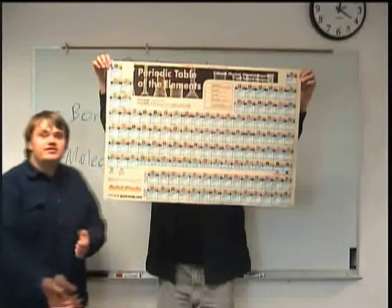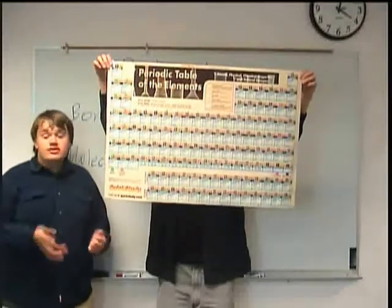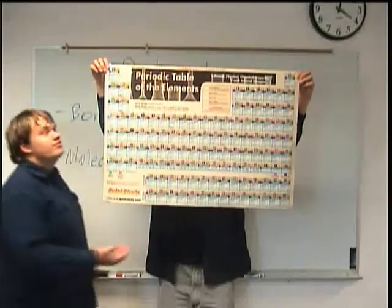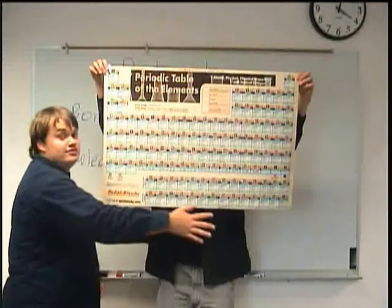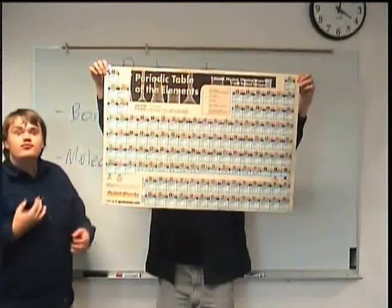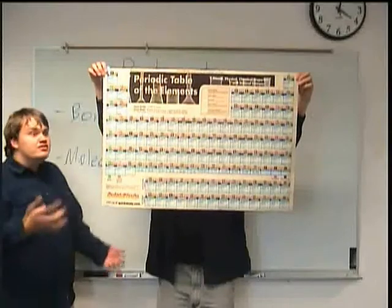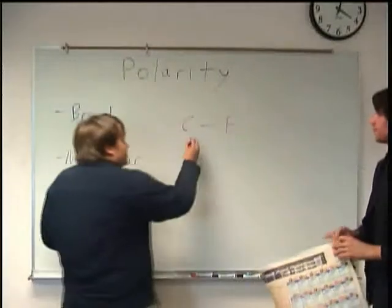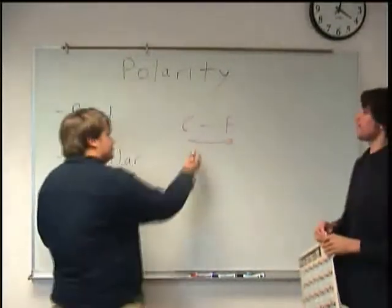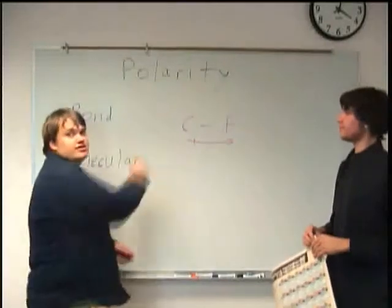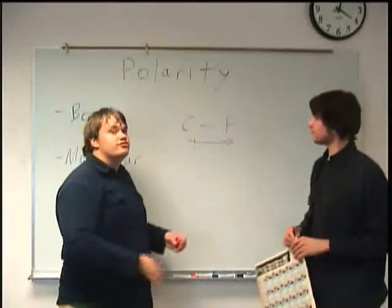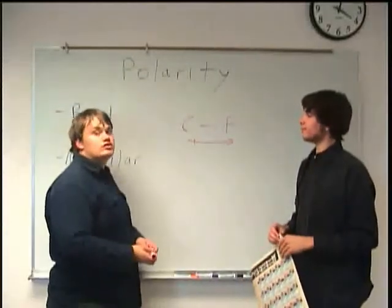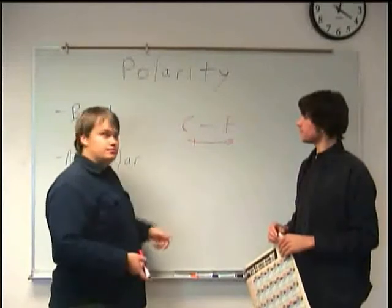Usually when you have that wide of a gap, like three spaces or so away from each other, that's usually a good indication that it's polar, because carbon is further to the left than the fluorine, which means it's less electronegative than the fluorine. And so fluorine, being more electronegative, is going to take more of the electrons toward it, and it's going to go this way. And this arrow is to show polarity.